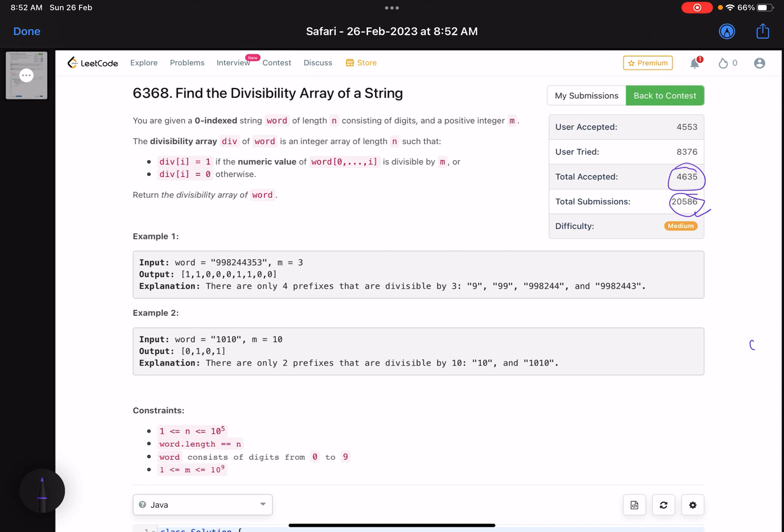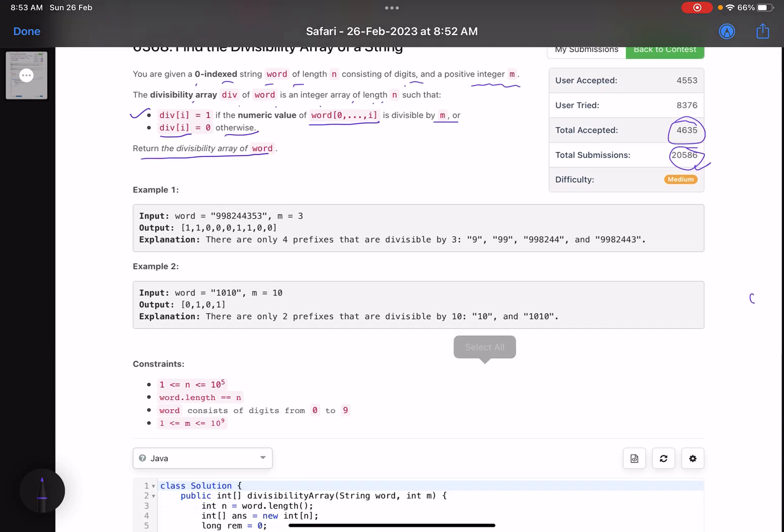Let's see what the problem is trying to say. The problem name is Find the Divisibility Array of a String. You are given a zero-indexed string word of length n consisting of digits and a positive integer m. The divisibility array div of word is an integer array of length n such that div[i] equals 1 if the numerical value of word[0 to i] is divisible by m, or div[i] is 0 otherwise. Return the divisibility array of word.